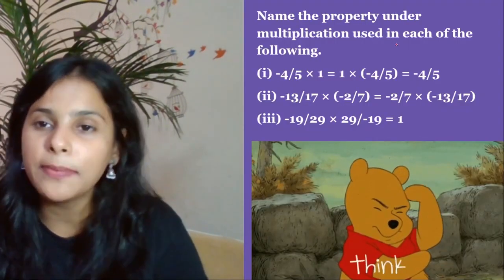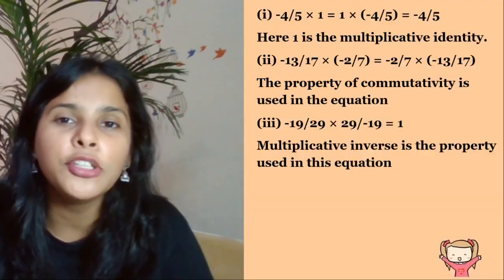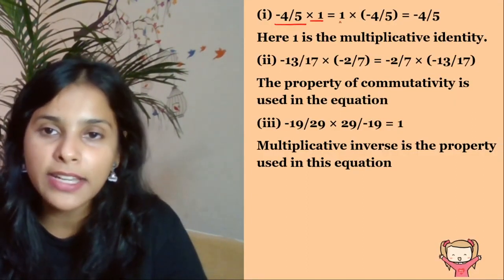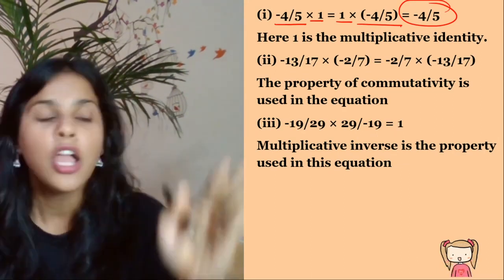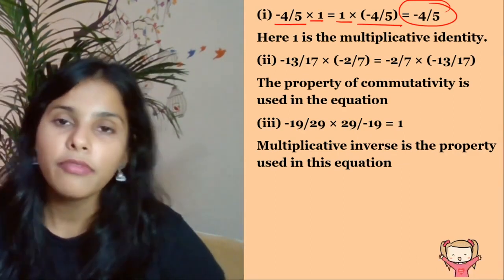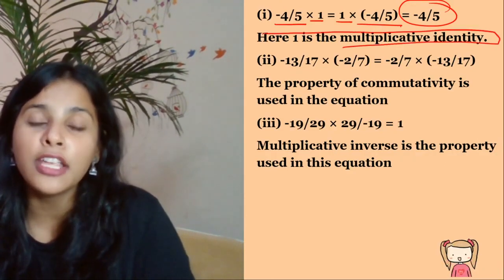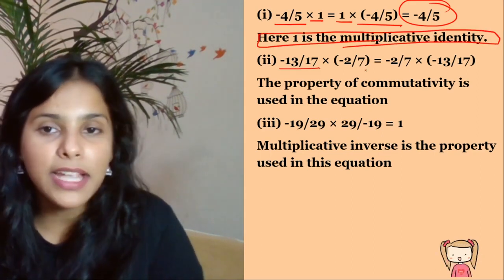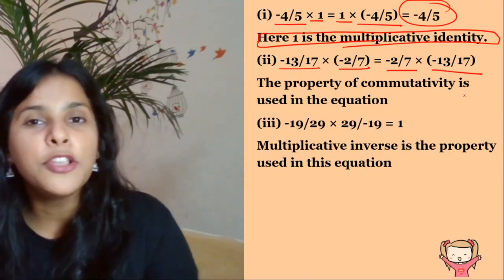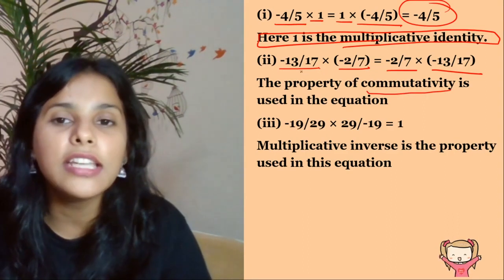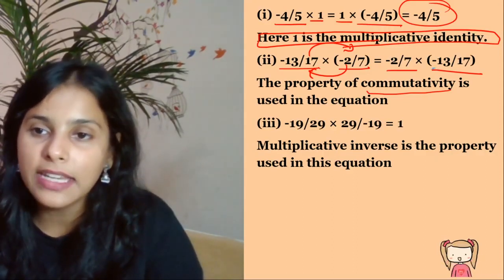Next question: name the property under multiplication used in each of the following. We need to identify which property is used. First part: -4/9 × 1 = 1 × -4/5 = -4/5. Any number multiplied by 1 gives that number itself — 3×1=3, 4×1=4 — so 1 is the multiplicative identity. Second part: -13/17 × -2/7 = -2/7 × -13/17. Here the order is changed — that is commutativity.